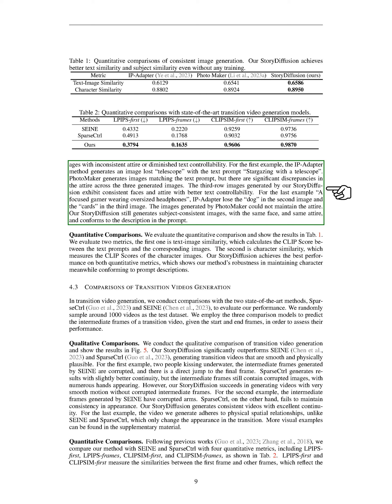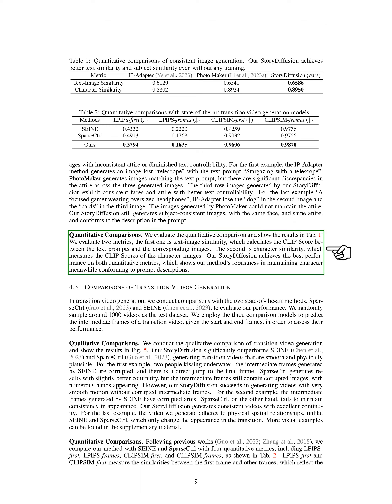The qualitative results showed that our Story Diffusion Method produced highly consistent images compared to IP Adapter and Photomaker, which sometimes generated images with inconsistent attire or less controllable text. The quantitative evaluation demonstrated that our Story Diffusion Method outperformed the comparison methods in text-image and character similarity metrics, indicating its robustness in maintaining character consistency while adhering to prompt descriptions. Our method also outperforms recent approaches in generating subject-consistent images and videos, showcasing enhanced performance in maintaining character consistency and adhering to prompt descriptions.